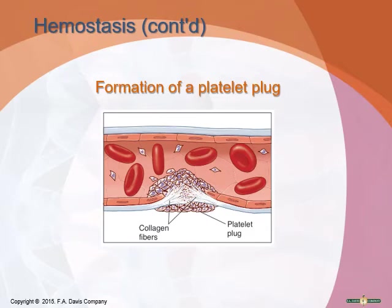The second step of hemostasis is the platelet plug. The collagen fibers of the vessel wall are torn by the injury, creating a rough spot where the wall is normally smooth. Platelets floating by stick to that rough spot and secrete a chemical attracting even more platelets. Eventually they collect there and develop a plug for the hole — the initial seal to stop the bleeding.